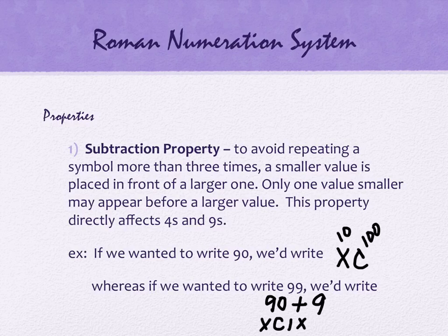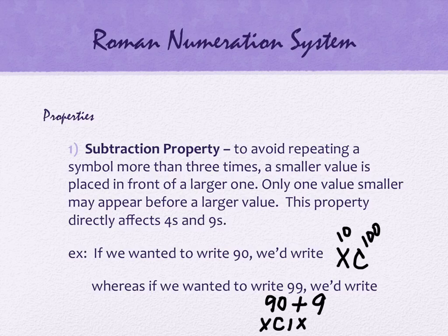So if it was like 37, you repeat symbols. How do I get 30? I do three X's. How do I get 7? I do a 5 and two 1's. What if it's like 98? The subtraction property would affect the 90 part of it, but not the 8.